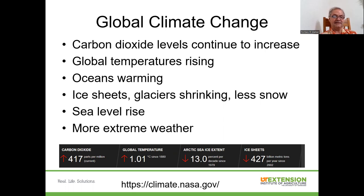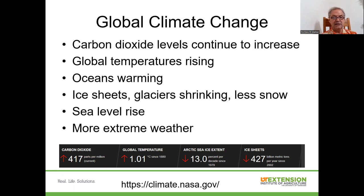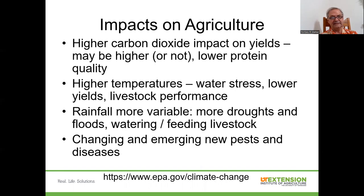The warming of the oceans has a significant impact on our weather patterns, especially our rainfall and hurricanes. We know that in areas where ice and snow are common, the ice sheets and glaciers are shrinking. There's less snow — not so much impacting us here in Tennessee, but in other parts of the world it's got a significant impact. As we see temperatures rising and ice sheets melting, we see sea levels rising and more extreme weather events.